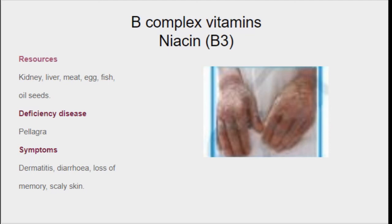B3 vitamin is niacin. The resources are kidney, liver, meat, egg, fish, and oil seeds. Deficiency of this vitamin leads to pellagra. The symptoms of pellagra include dermatitis, diarrhea, loss of memory, and callous skin. The pellagra disease appears on the hands, with scaly patches appearing on the skin.